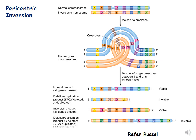Now in this lecture we will be focusing on pericentric inversion. This picture is from Russell. These are the two homologous chromosomes — this is a structural heterozygote where one chromosome is normal (ABCDEFGH) and the other chromosome is showing pericentric inversion, with the order of the genes changed to ADCBEFGH. Since the centromere is included in the inverted region, this is pericentric inversion.